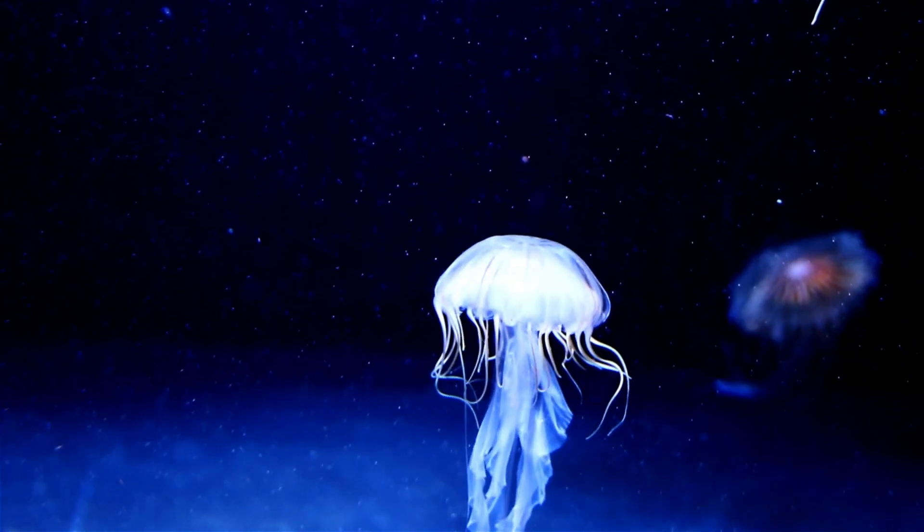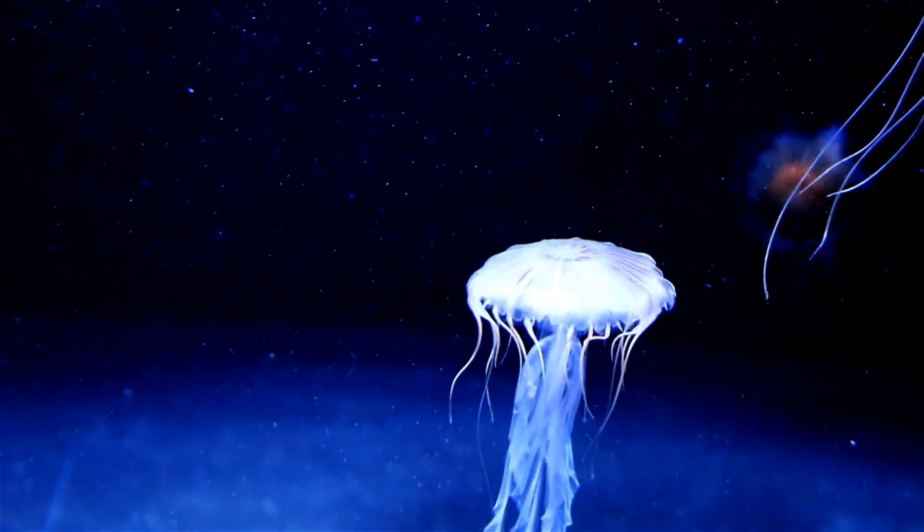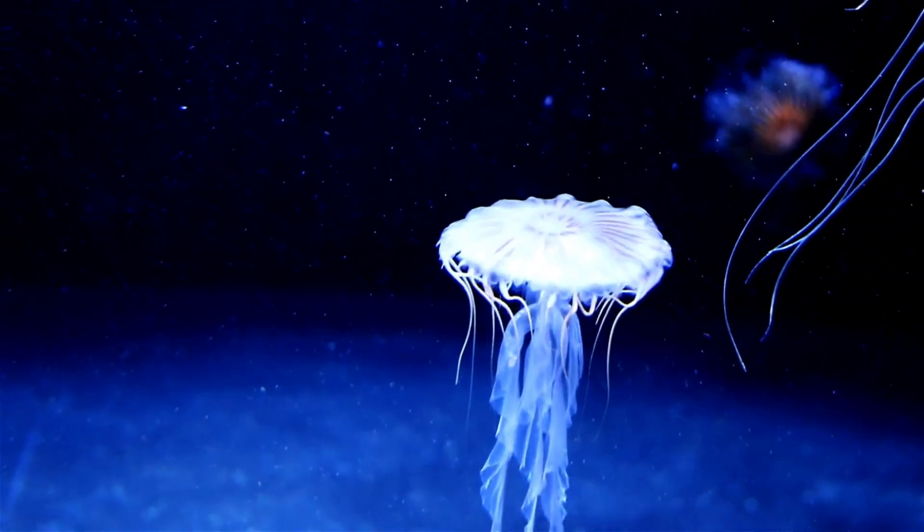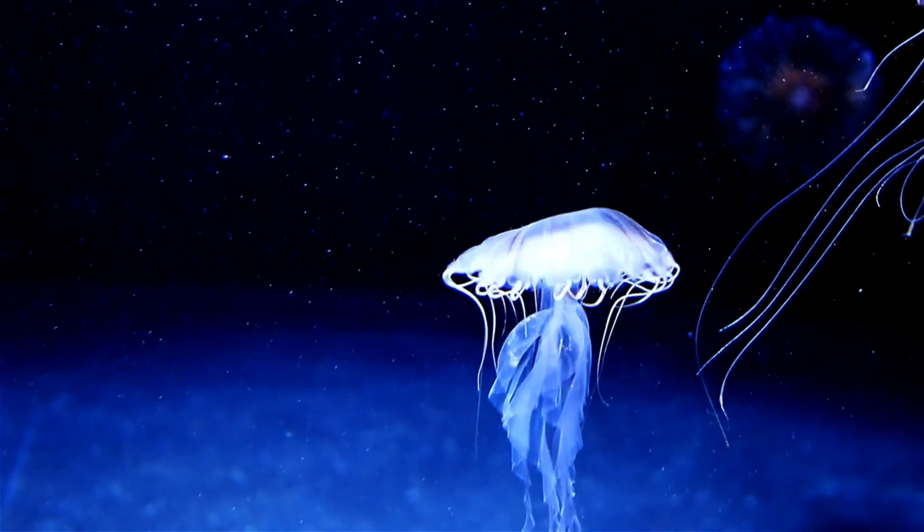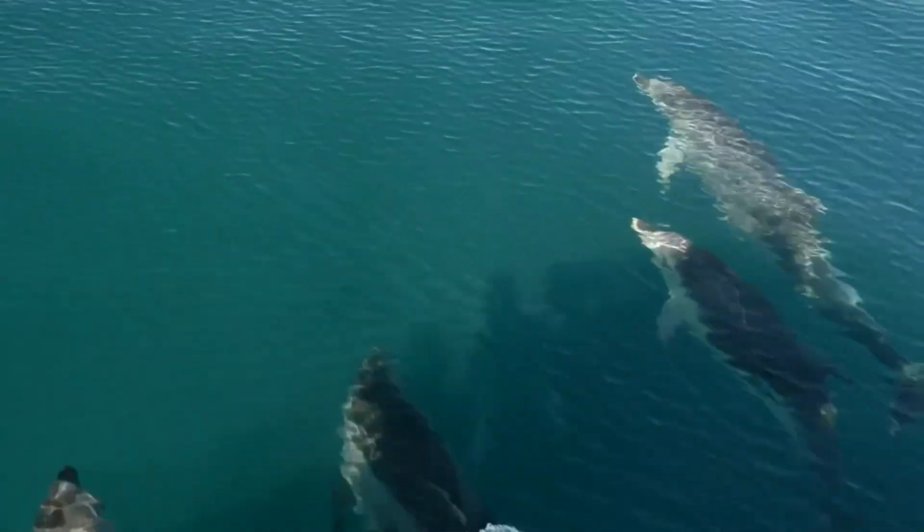Organismal Scale: Moving further up the scale, we transition to the organismal level, where multicellular life flourishes. This scale encompasses everything from tiny microorganisms to towering redwoods and massive blue whales.